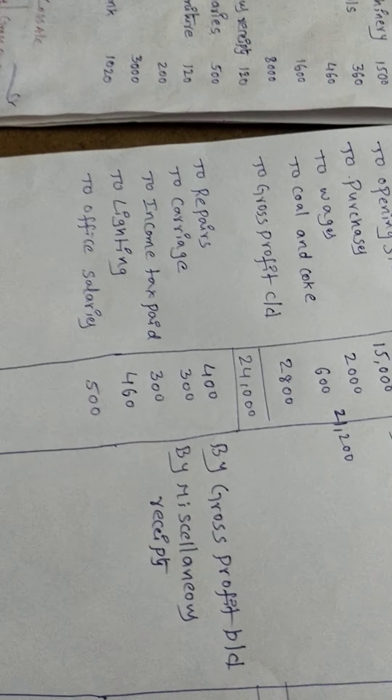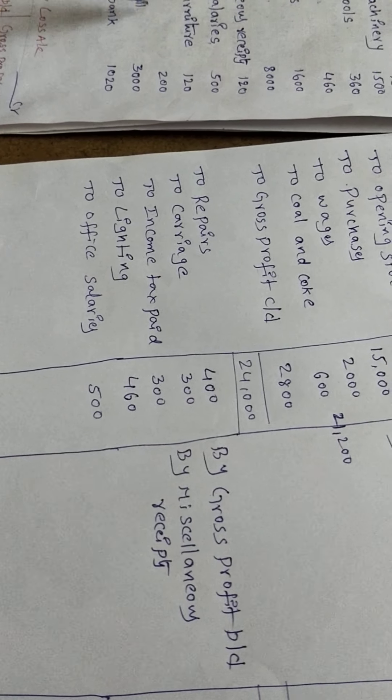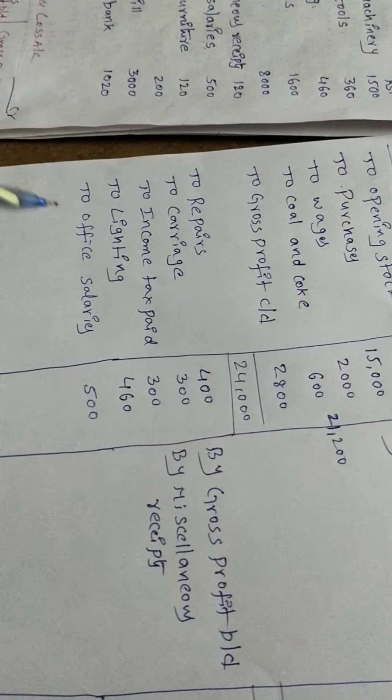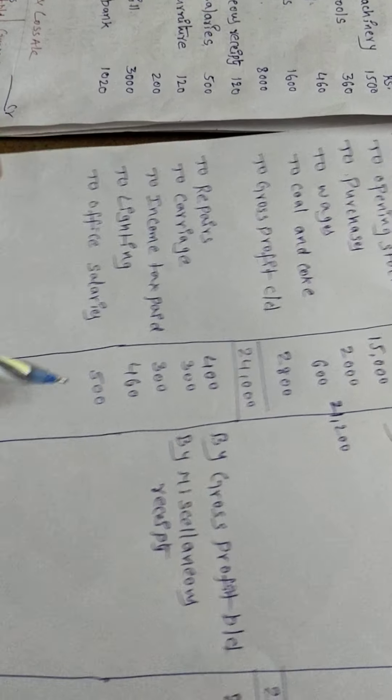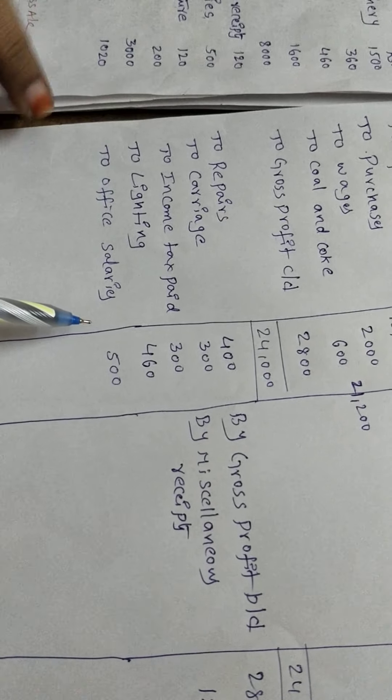Furniture is an asset. Patents and goodwill are intangible assets. Cash at bank is also an asset. We have now posted all the items.